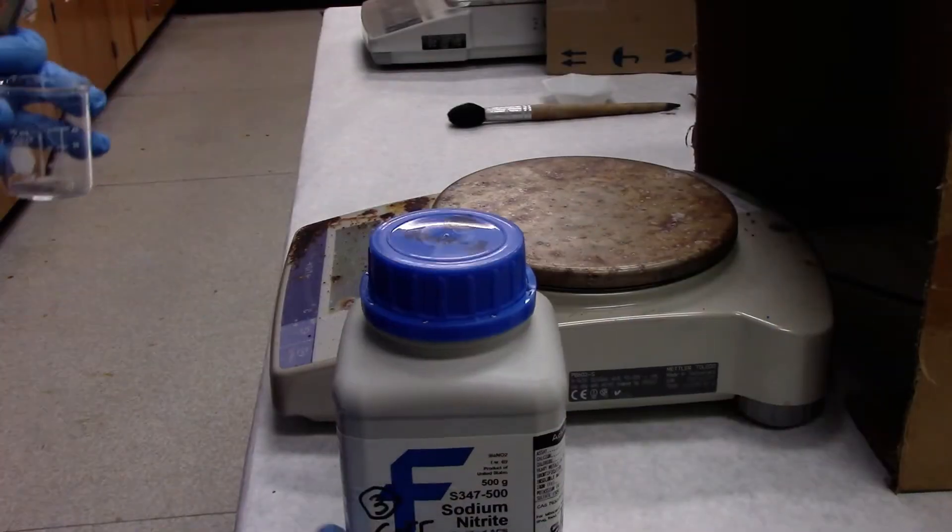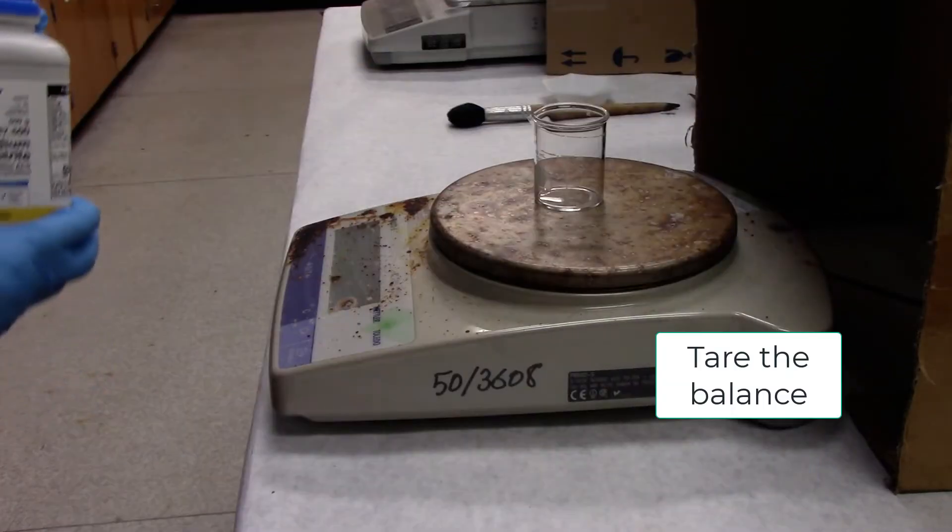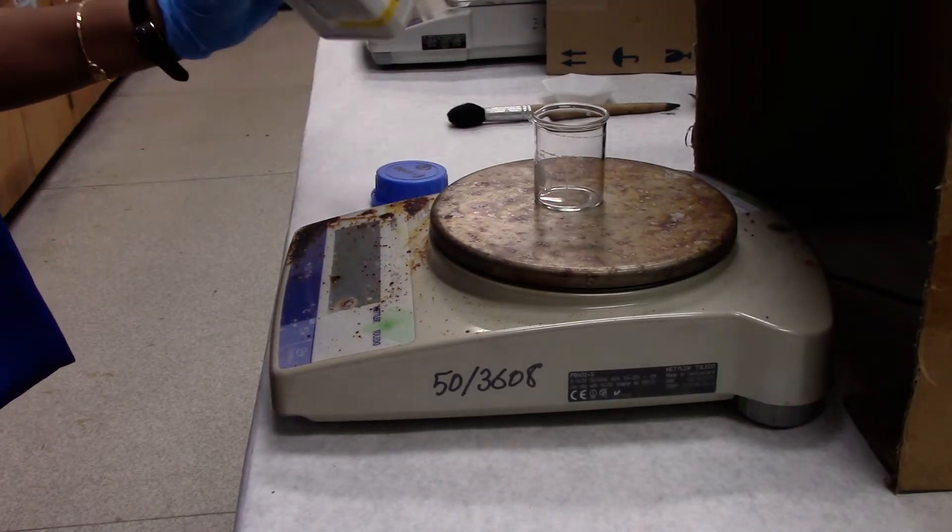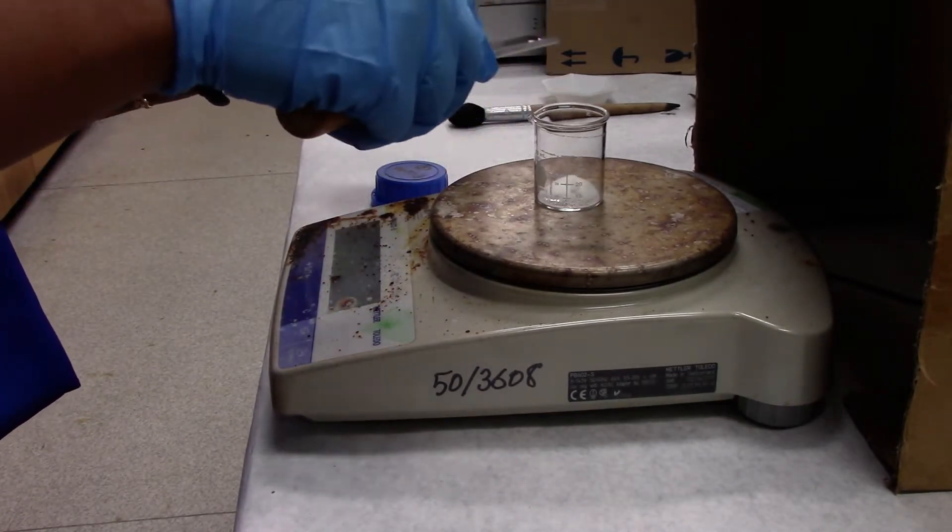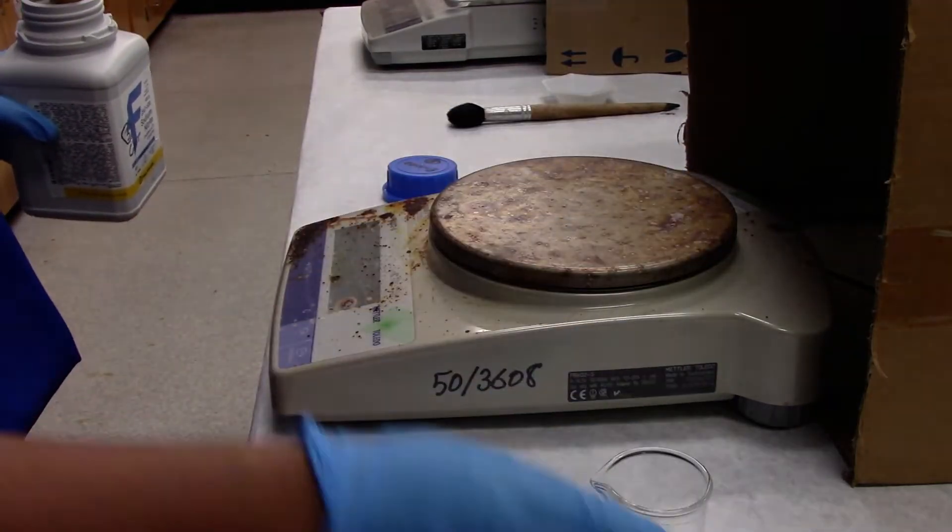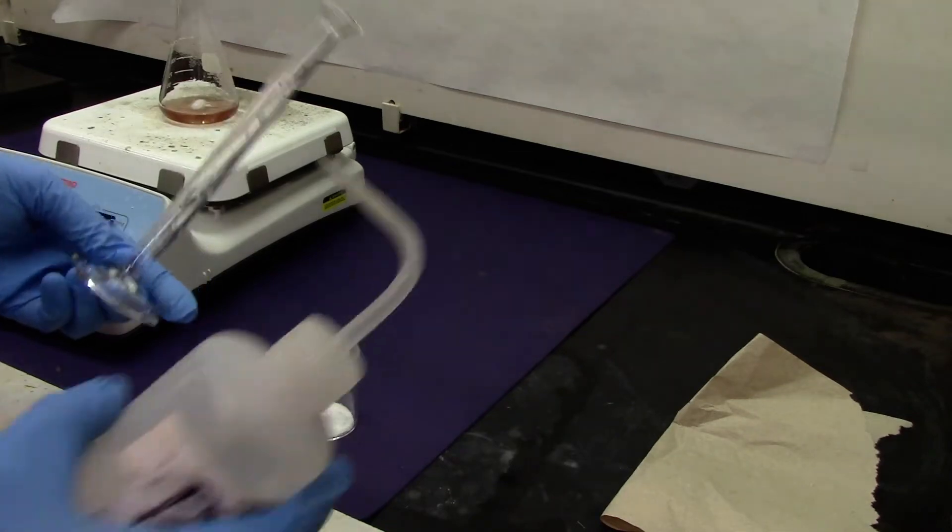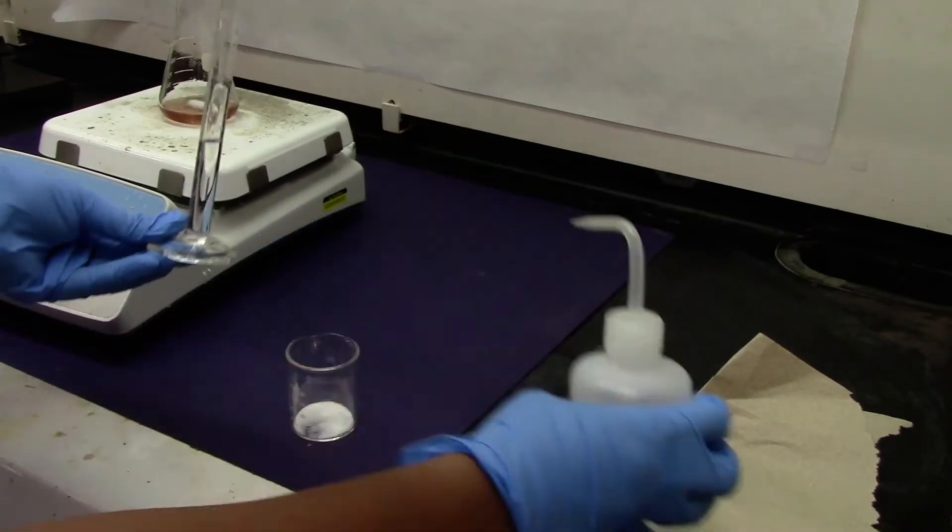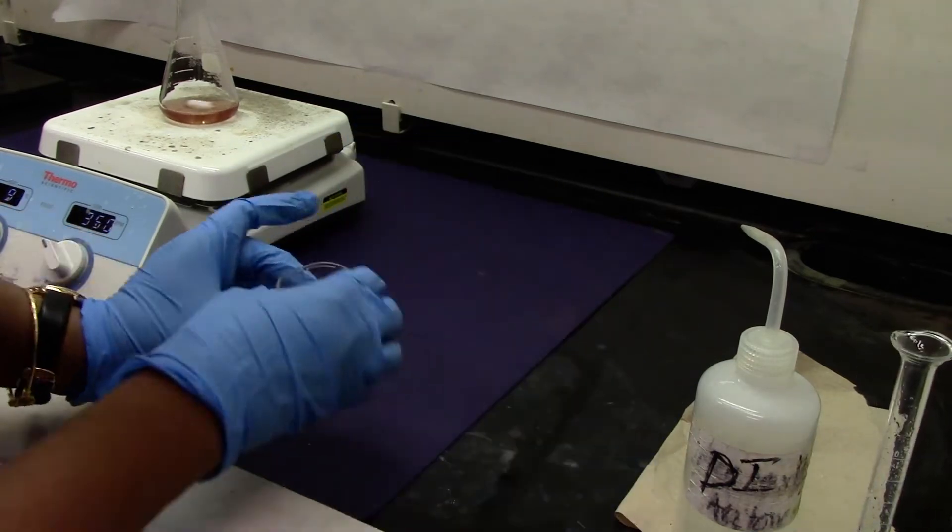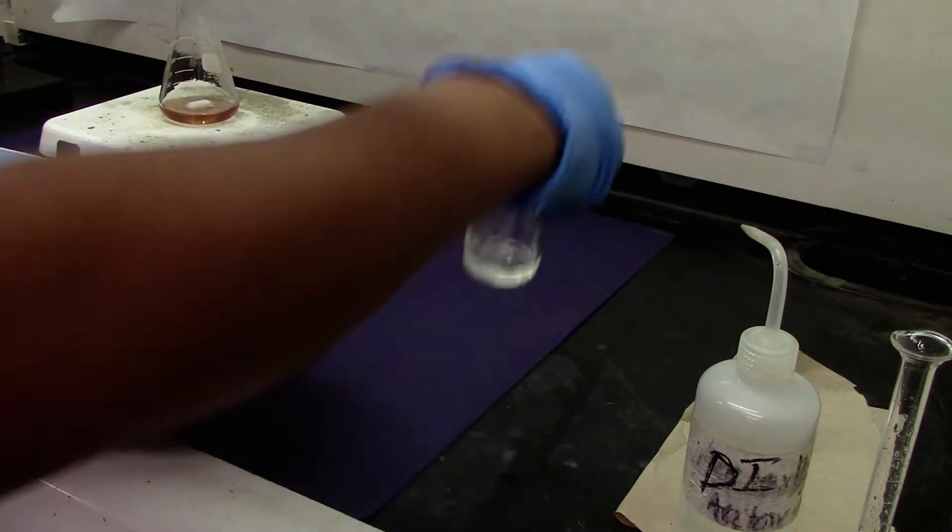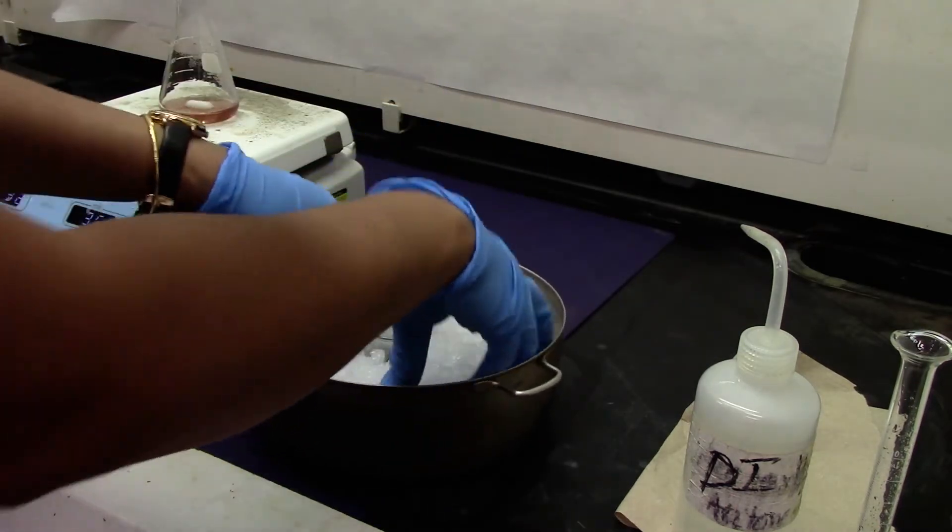We will be weighing sodium nitrite. One gram of sodium nitrite. To the sodium nitrite I'm going to add 5 mL of DI water, swirl it to make a solution, and place it in an ice bath to cool down.